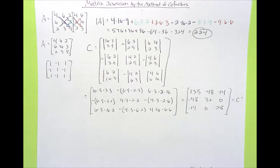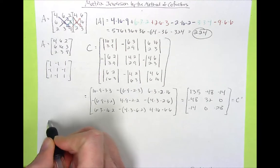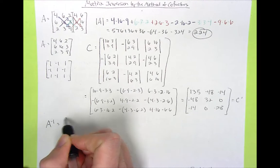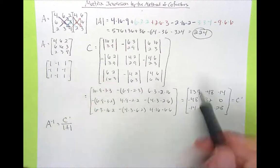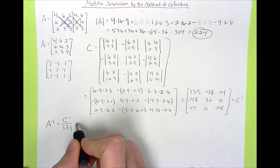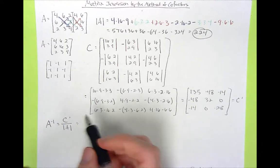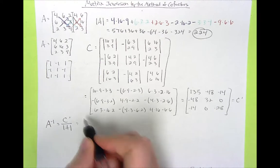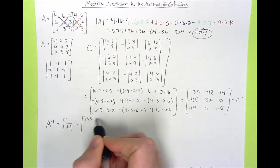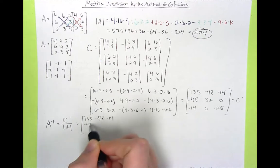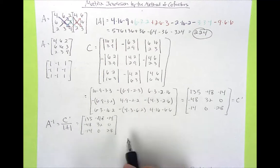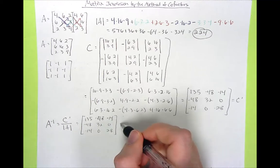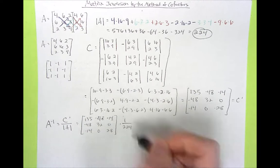Now we can divide that by the determinant of A. So the inverse of A equals the transpose of C divided by the determinant of the original matrix A, which we found to be 224. So we multiply the matrix 135, −48, −14, −48, 32, 0, −14, 0, 28 by 1 over 224.